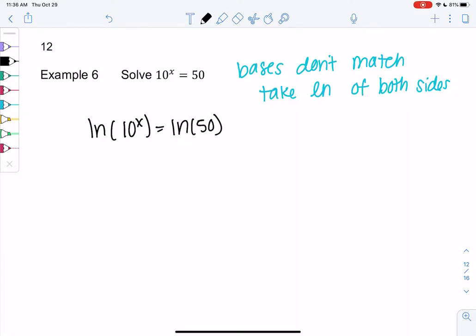And the reason logs are useful is the power rule. So the power rule tells me I can bring the x out front. It's the whole point of taking the logs and that'll make it really easy to solve for x. So that tells me that x times ln of 10 equals ln of 50.